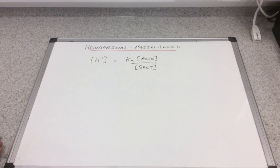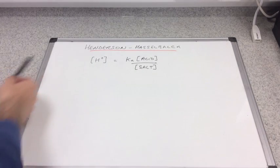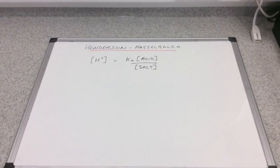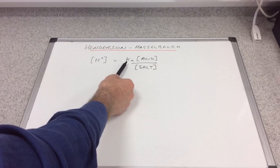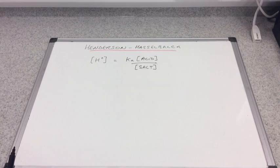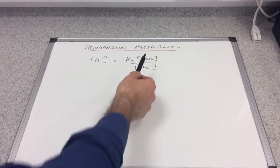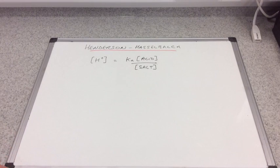There's another way you can calculate the pH of a buffer and that is by using what's called the Henderson-Hasselbalch equation. On the board you can see the method we've already talked about, so the hydrogen ion concentration of a buffer equals the acid dissociation constant for the weak acid multiplied by the concentration of that weak acid divided by the concentration of the salt.